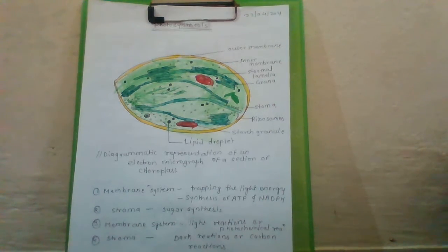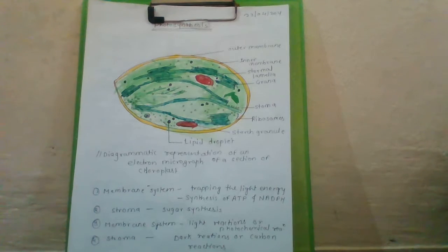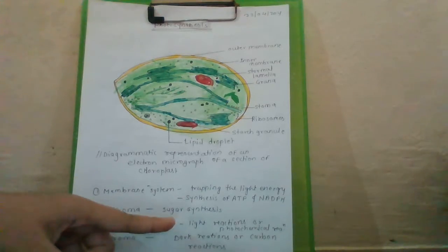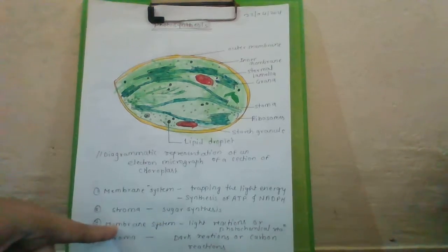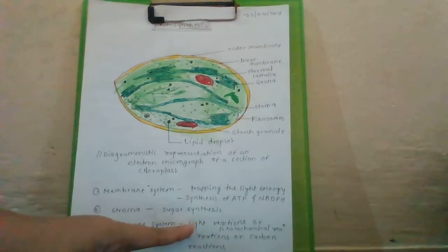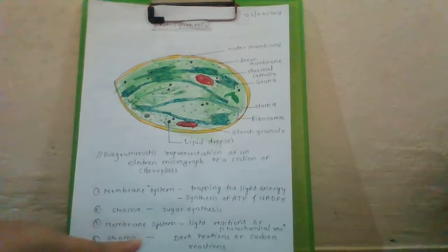The dark reactions are not directly light-driven, but are dependent on the products of the light reaction — ATP and NADPH. Hence, by convention, they are called dark reactions or carbon reactions. An important note: dark reaction does not mean it is carried out in the dark. It simply means it is not directly dependent on light. Dark reactions are carried out by the stroma.